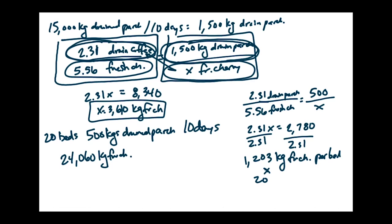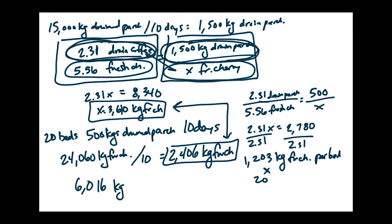And now we said it dries for 10 days, so we need to divide by 10. And that's going to give us 2,406 kilograms of fresh cherry. And we can add that to our drying patio, 3,610. That's going to give us a grand total of 6,016 kilograms of fresh cherry every day.